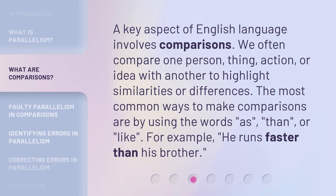A key aspect of the English language involves comparisons. We often compare one person, thing, action, or idea with another to highlight similarities or differences. The most common ways to make comparisons are by using the words 'as,' 'than,' or 'like.' For example, 'he runs faster than his brother.'